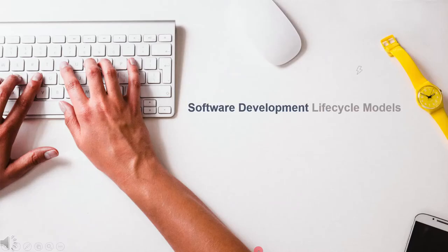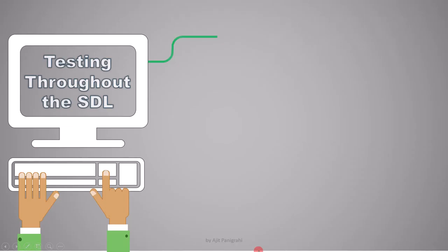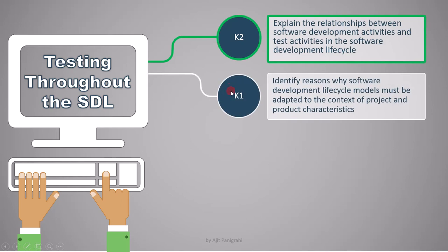In this lecture, we are going to see an overview of software development lifecycle models. There are two learning objectives in this session, and in this lecture we are going to address the first one: explain the relationships between software development activities and test activities in the software development lifecycle, which is marked as K2.